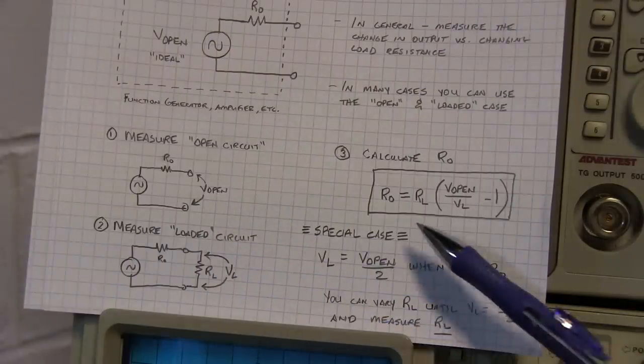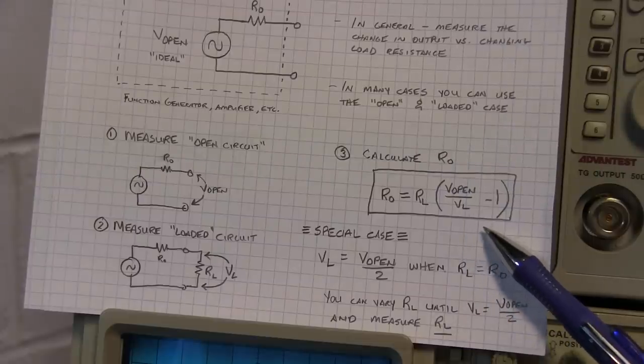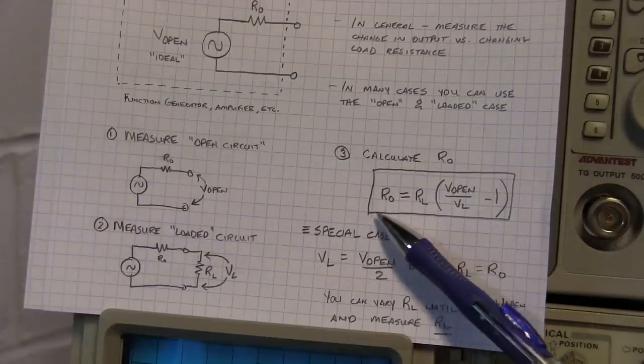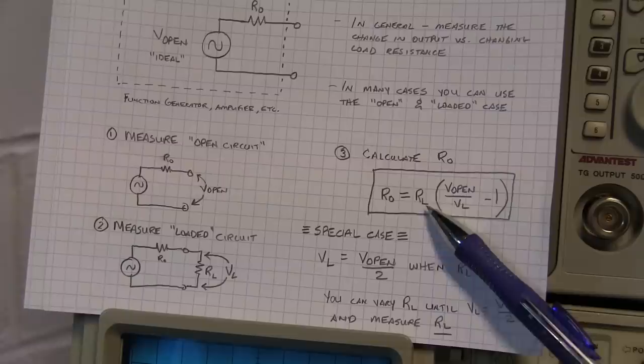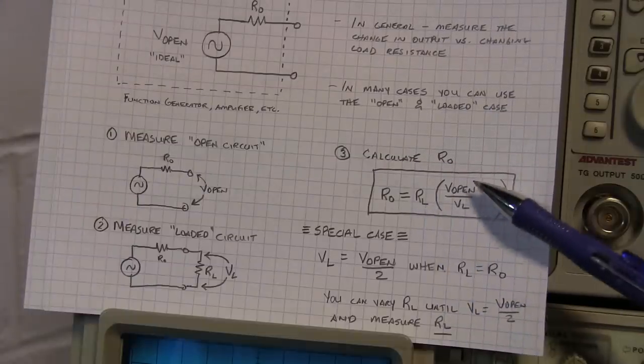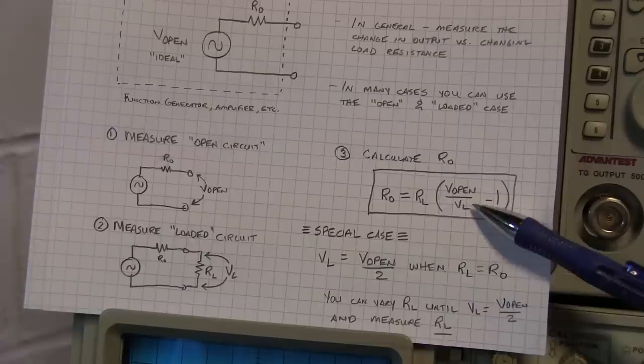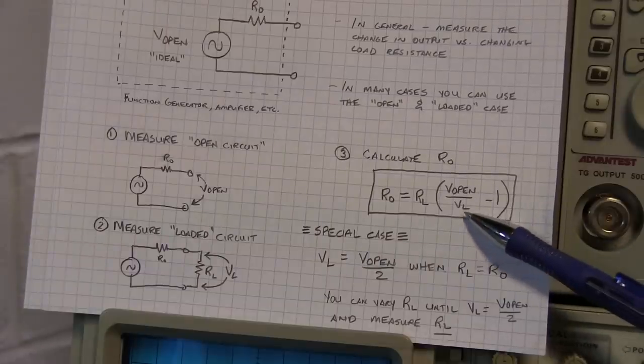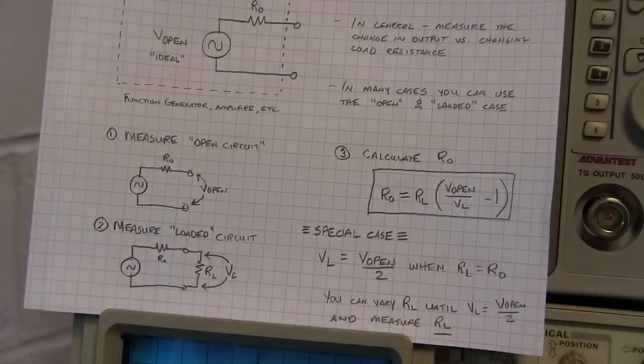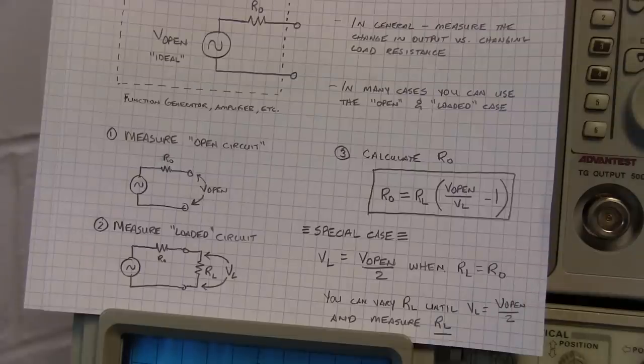And once you have those two voltages, the open circuit voltage and the loaded voltage, it's a simple matter of plugging them into this equation. The output resistance will simply be equal to the load resistance applied multiplied by this quantity: the open circuit voltage divided by the load voltage minus one. So let's go run that example.